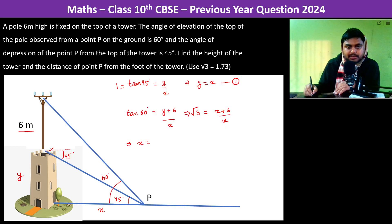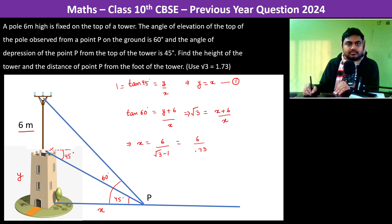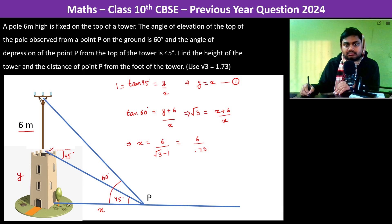Therefore x becomes 6 divided by (√3 − 1), which is 6 divided by 0.73, that is 600 divided by 73 meters.